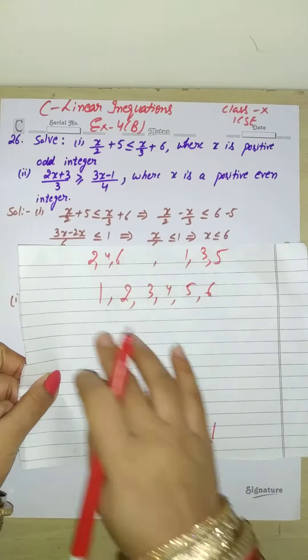Now, why do I write here? Because it said that x is a positive odd integer. There are also negative numbers in integers, but here it has mentioned that we have to take positive. Now, we have to take odd.